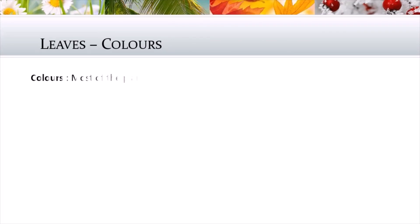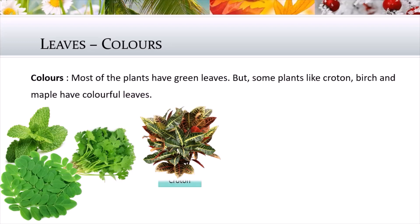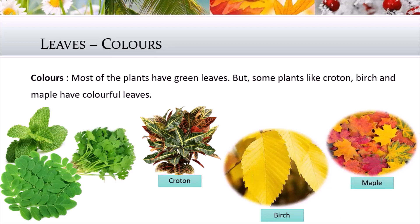Leaves also vary in color. Most of the leaves we see around us are green in color, but some plants like croton, richi, and maple have colorful leaves. Croton is a common ornamental plant we see around us.